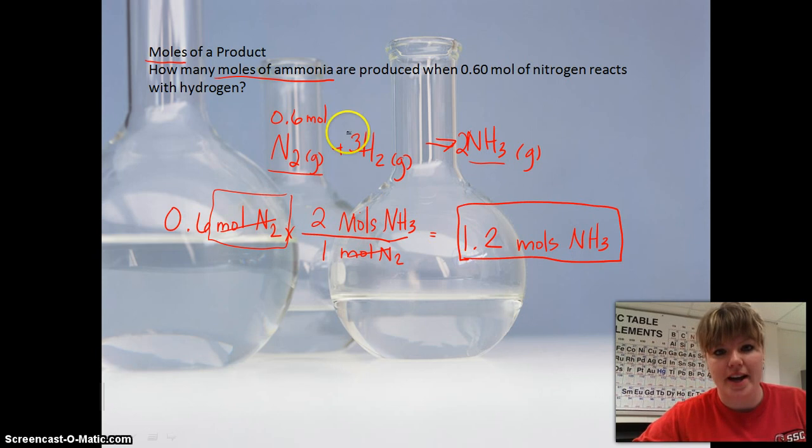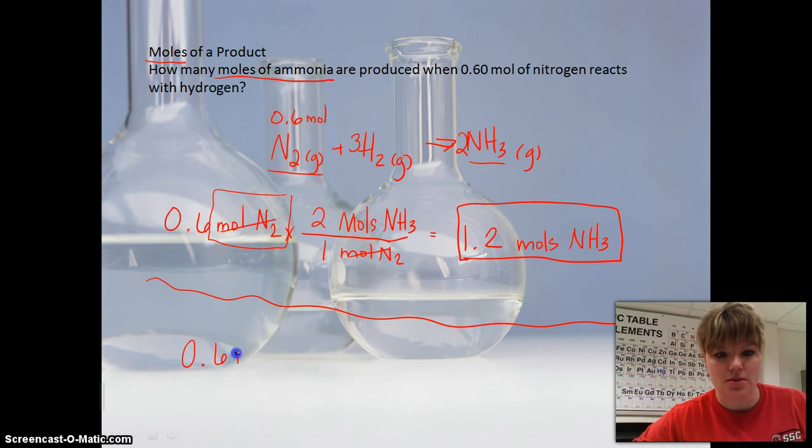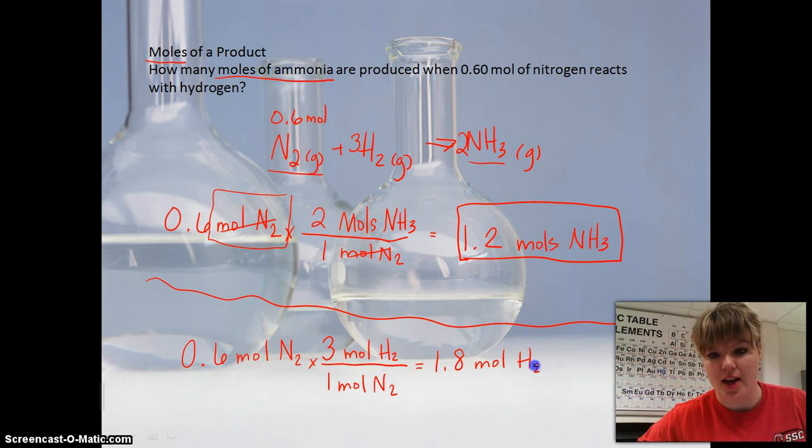Now, if they would have asked for hydrogen, we could have done the same thing. This is a different problem here. Let's just say we had 0.6 moles of N2. We could have done the same exact thing and calculated moles of hydrogen just by using the other conversion factor. So moles of N2, then we would use 3 moles of H2 on top. This would be 0.6 times 3, giving us 1.8 moles of H2 gas. So these are pretty easy. It's just one step using the mole ratios.